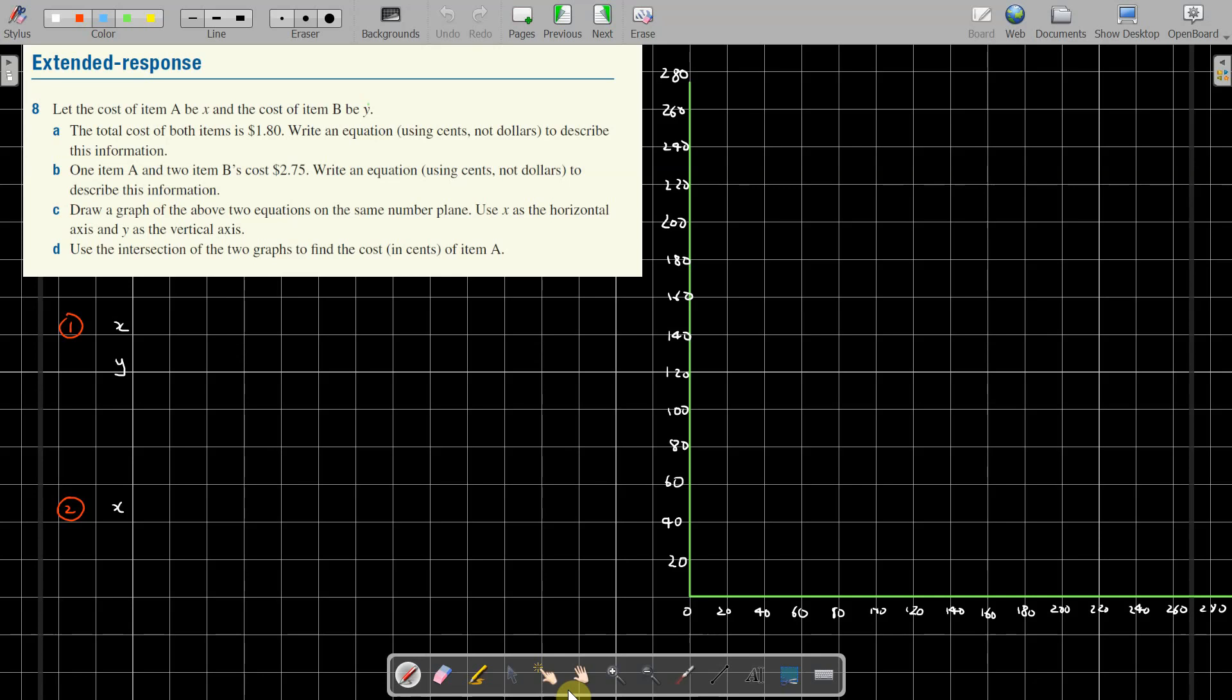Alright everyone, here we are at Topic 5 Chapter Revision, looking at Extended Response Question 8. Now I have set up part of the answer already because we were figuring out what to do with the scale of each axis. We'll get to that in a minute. So Question 8: let the cost of item A be X.